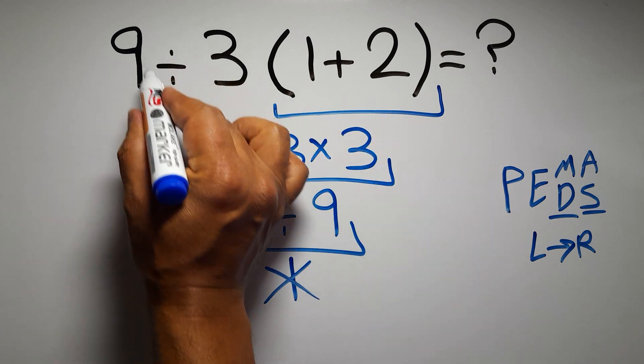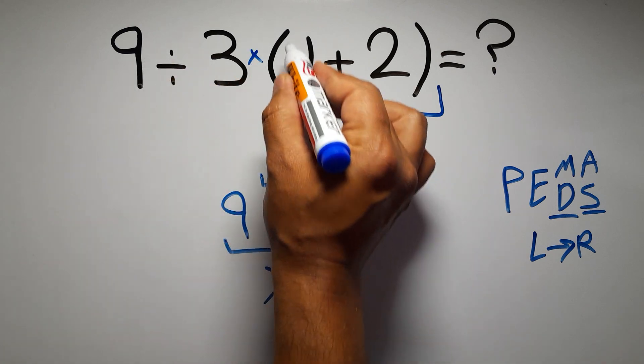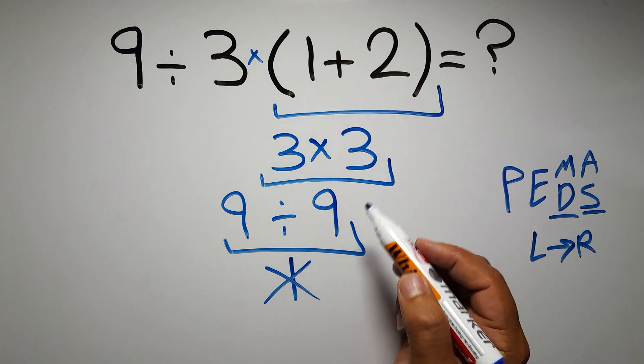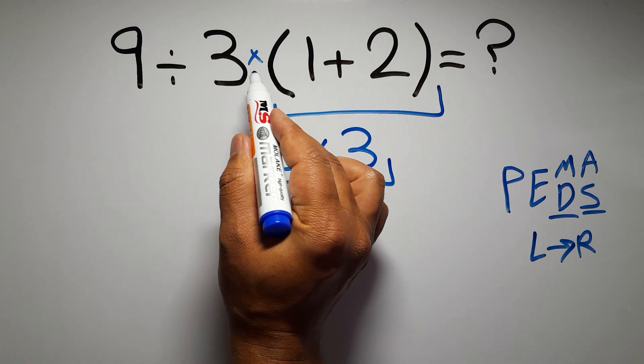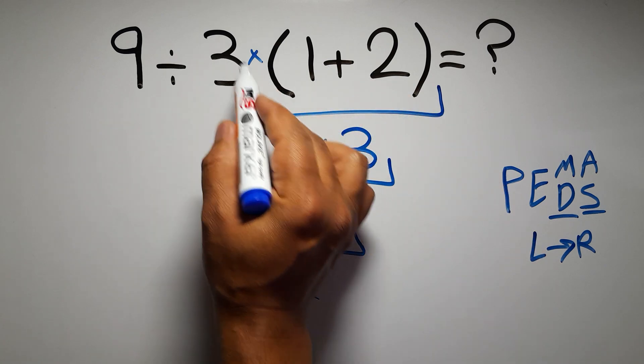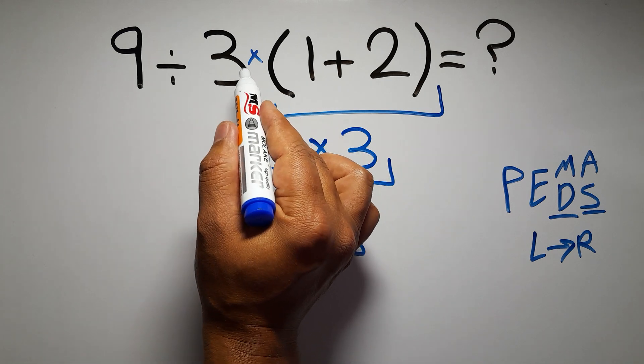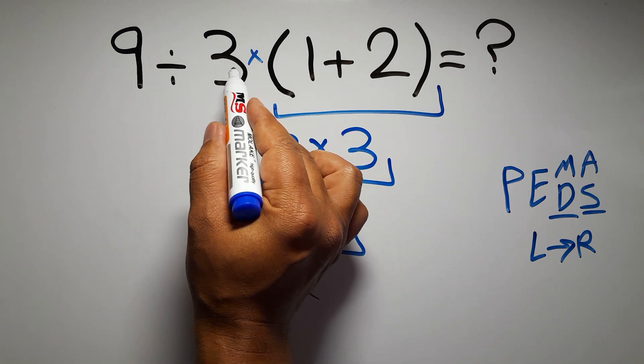In this expression we have one division, one multiplication, and one parentheses. Inside these parentheses we have one addition. Here we have a multiplication because in mathematics when a number is placed next to parentheses it means multiplication, and we usually don't write the multiplication sign for brevity.